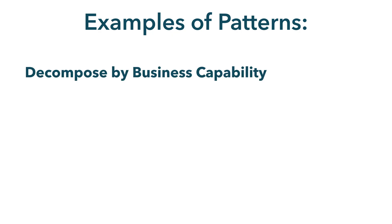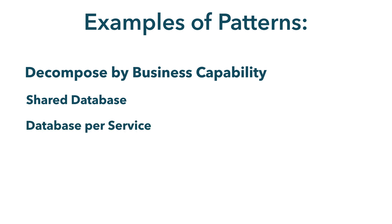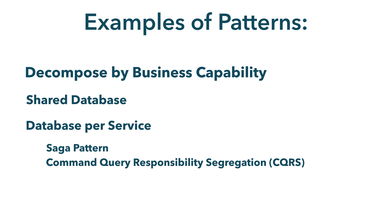Here are some examples of data management patterns: decomposed by business capability, used to map services directly to business capabilities; shared database, used when services access mainly shared data and when scale is not required; and database per service, used when services access mainly private data and when scale is required. Some patterns have sub-patterns. For example, the database per service pattern requires several sub-patterns such as: the Saga pattern, used to develop asset-like transactions across databases; the CQRS pattern (Command Query Responsibility Segregation), used to retrieve data from multiple services; and the domain event pattern, used to publish an event each time a service updates its data.